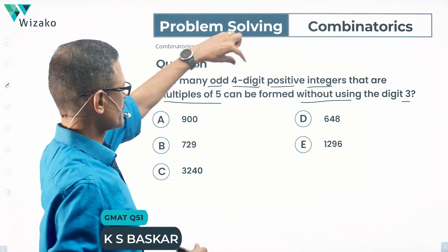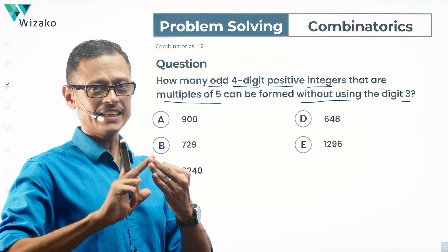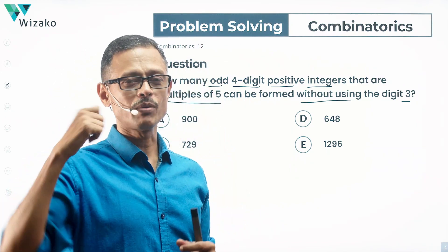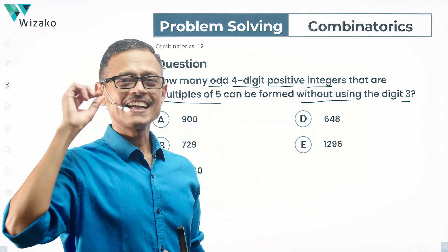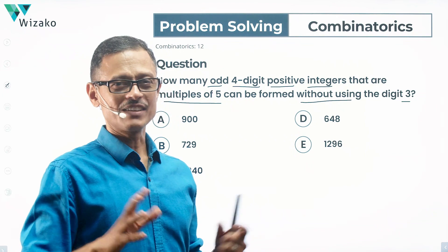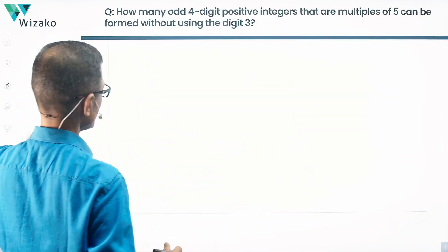The number should be, to start with, a 4-digit positive integer. It should be an odd 4-digit positive integer, it should be a multiple of 5, and it should not contain the digit 3. A lot of conditions to take into consideration. Let's take a look at it.